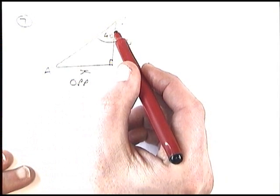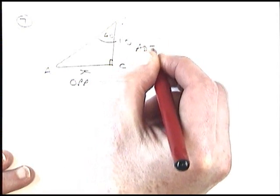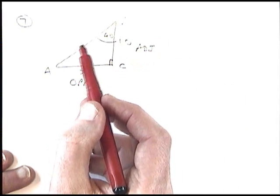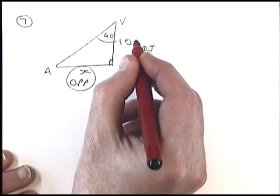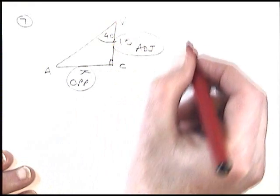The side between my angle and my right angle is my adjacent. The side over there is my hypotenuse - nothing's on it, I won't be needing it. So I am interested in opposite and adjacent, and that is tan.